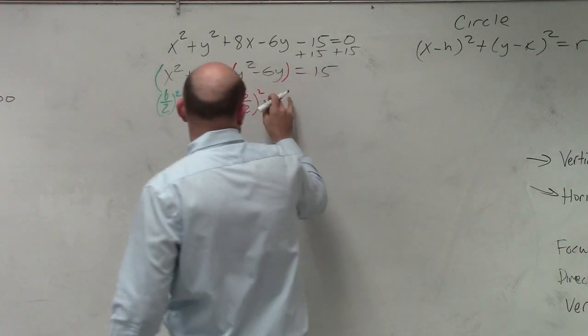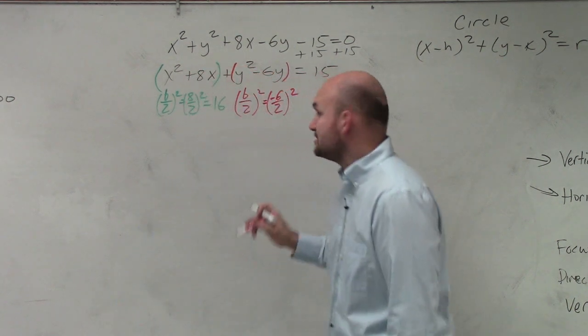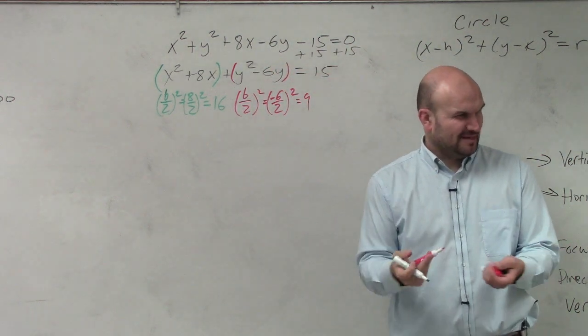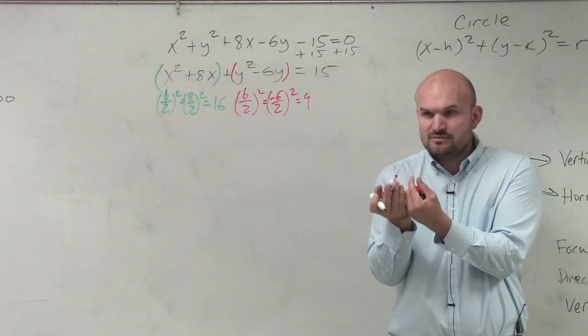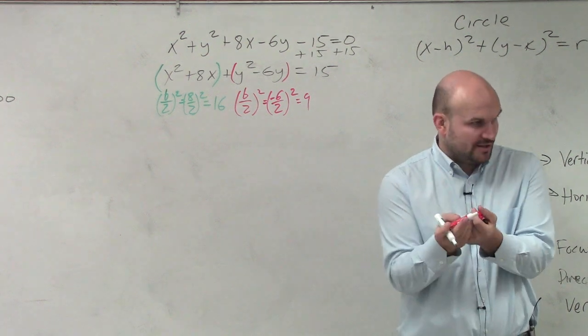Here I have negative 6, divided by 2, squared, which is 9. Does everybody see what I did? I'm taking the middle term of each of those quadratic expressions and dividing them by 2 and squaring them.